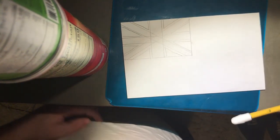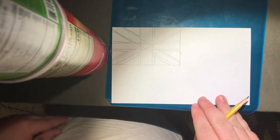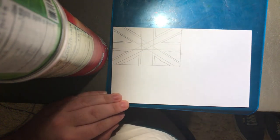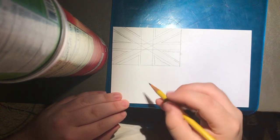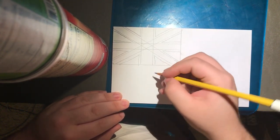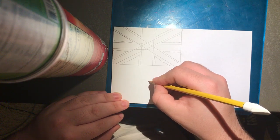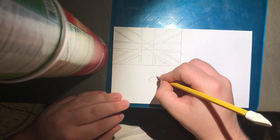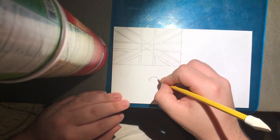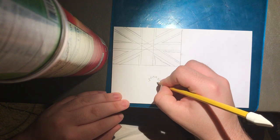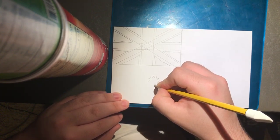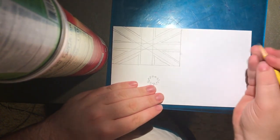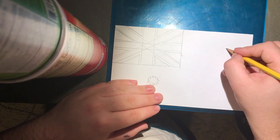And now we're going to make the five stars on the flag. There's going to be one under the Union Jack which is going to have 12 points. And then the other four are just going to be regular stars.